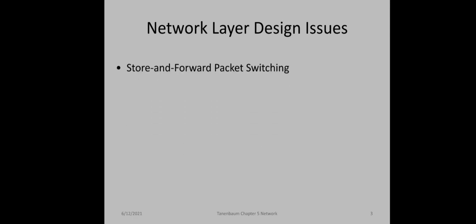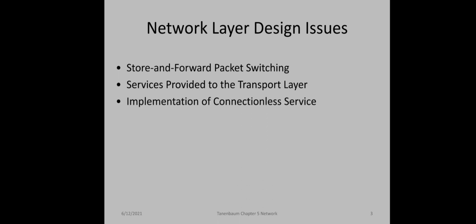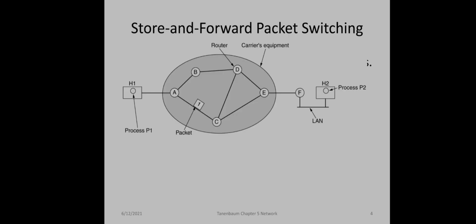Now let us move on to the different issues in network layer design. The first one is store and forward packet switching, then services provided to the transport layer, then the implementation of those services — connectionless service and connection-oriented service. Let us see these one by one.